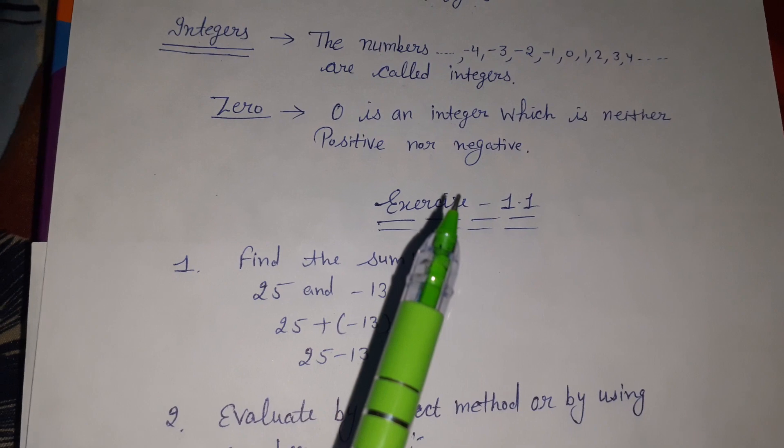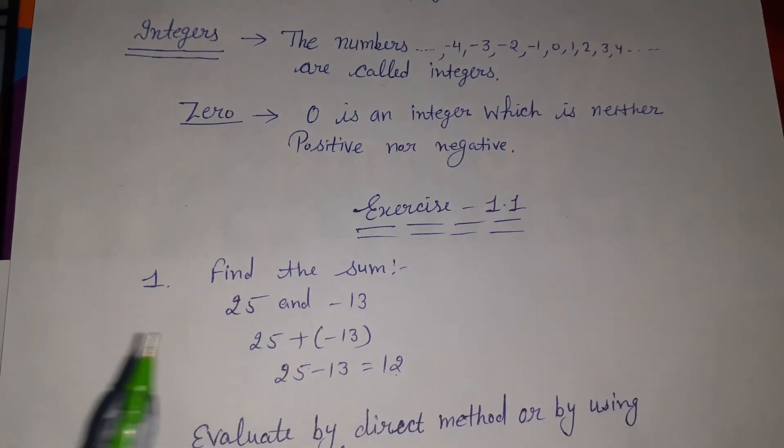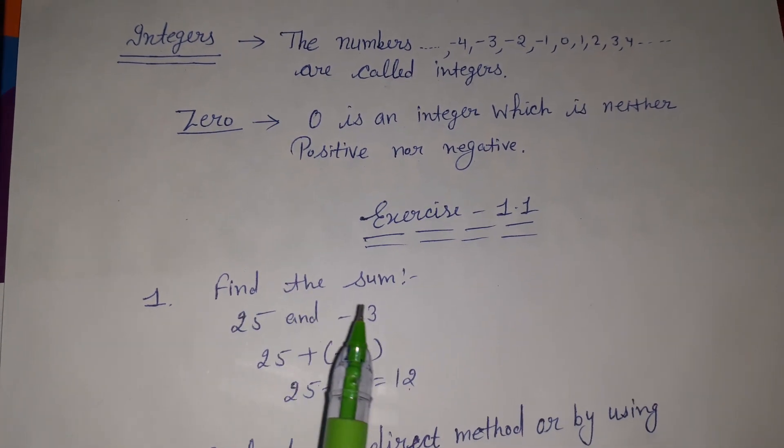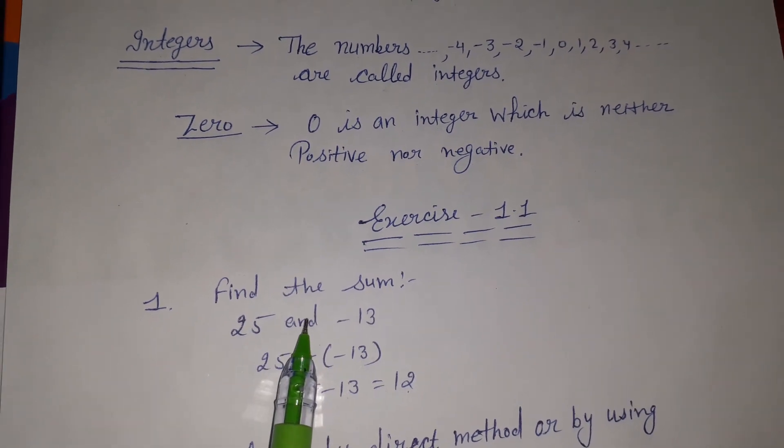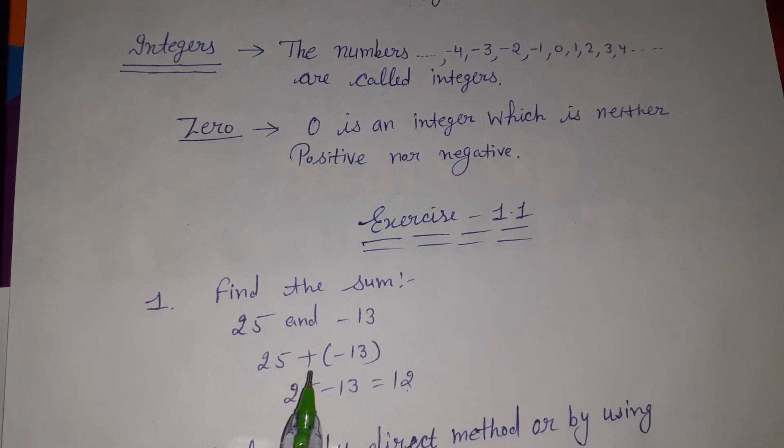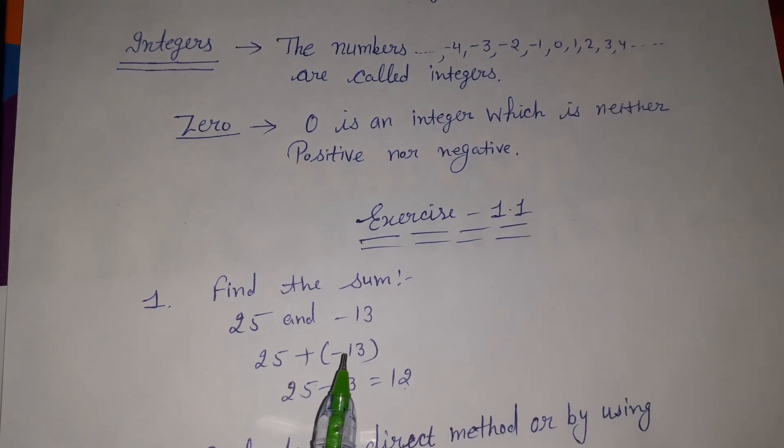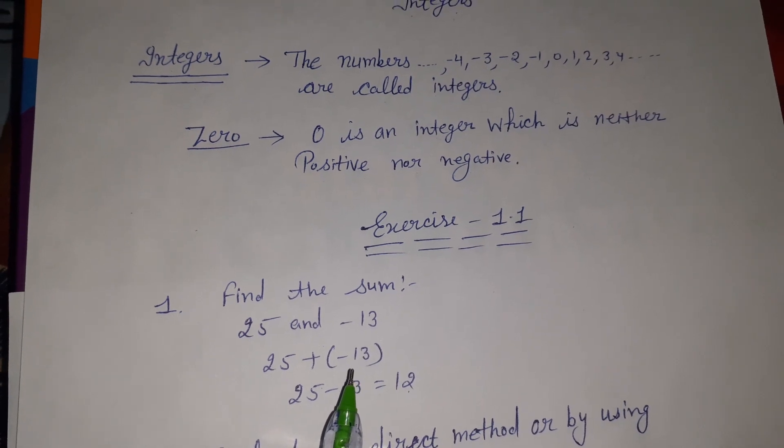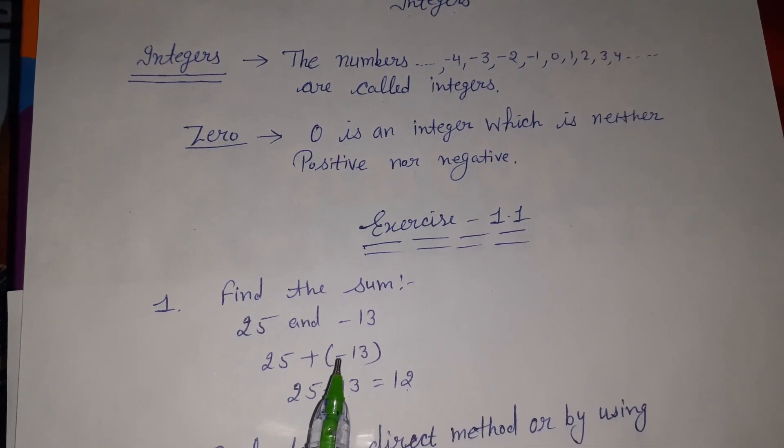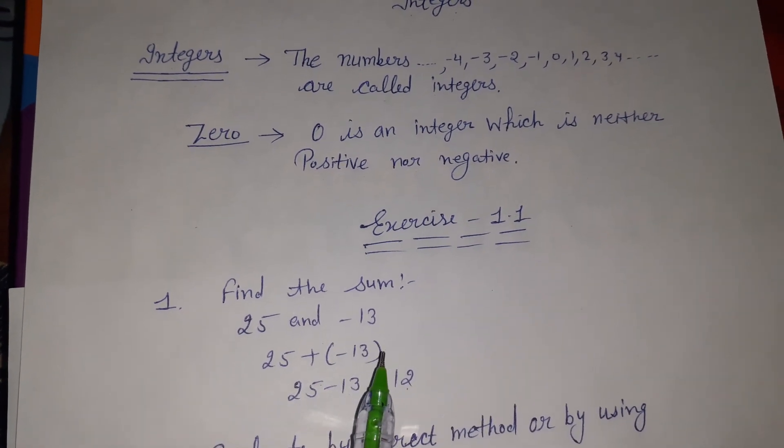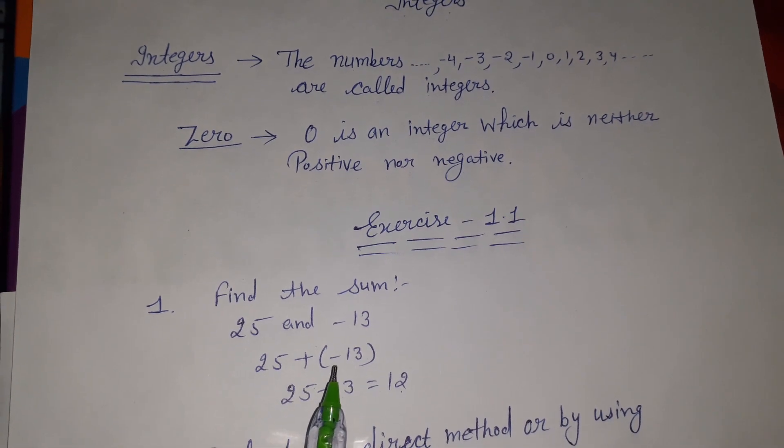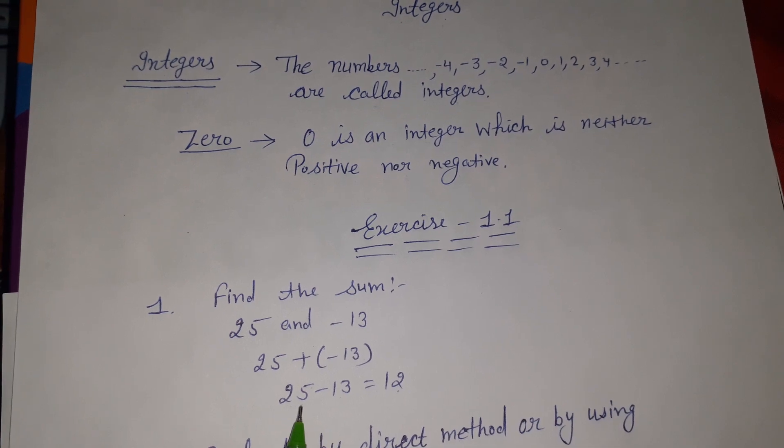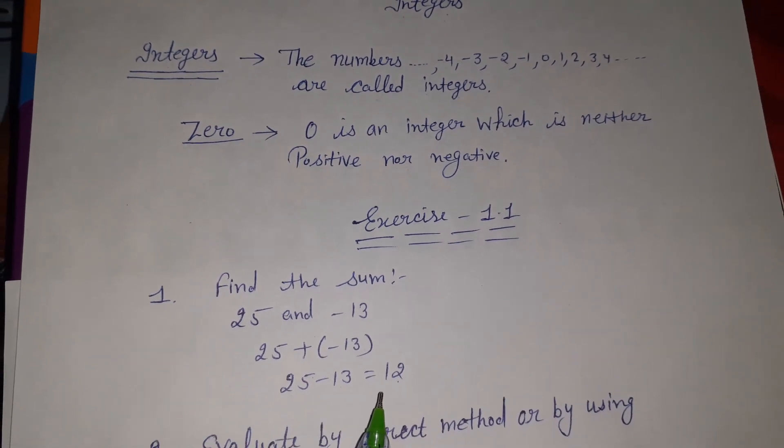First sum: find the sum. Sum means add. We need to add two integers: 25 and -13. For sum, instead of and, we use plus sign. So 25 + (-13). When two signs come together, we take one in brackets. Plus minus becomes minus. 25 - 13 equals 12.